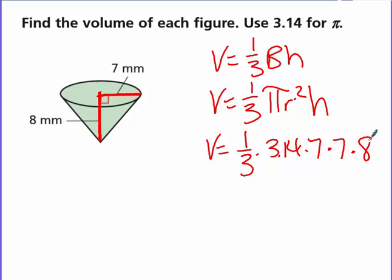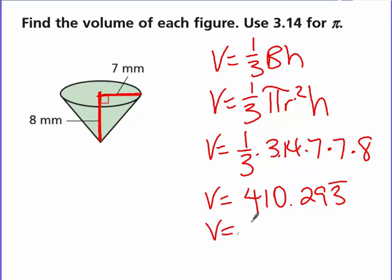This one is an ugly answer, so we're going to round to the nearest tenth. We end up with 410.293 repeating. The 9 after the decimal bumps that 2 to a 3, so our answer is 410.3 millimeters cubed. It's always the same thing: area of the base times how tall it is, but for a pyramid or a cone, we divide by 3.